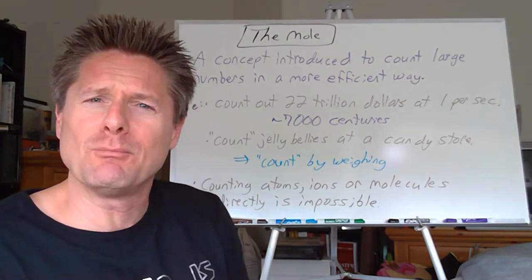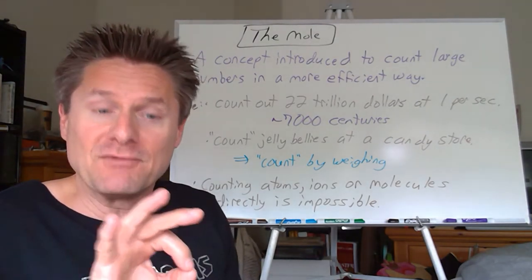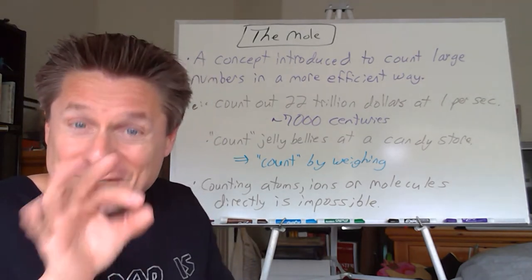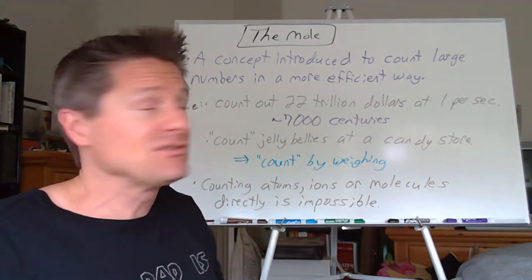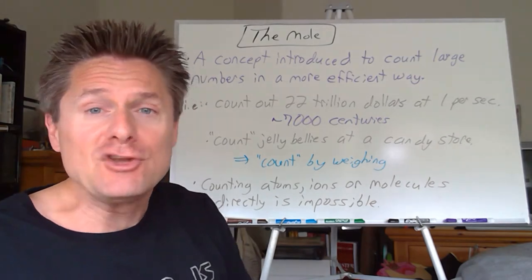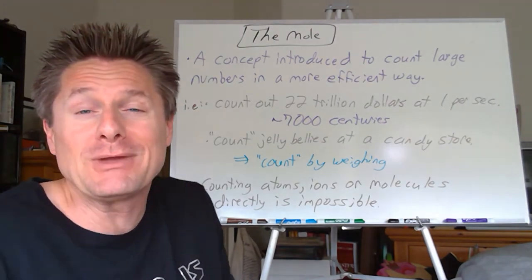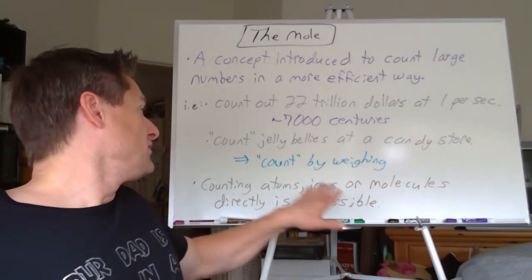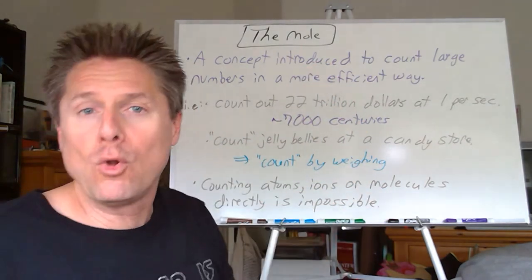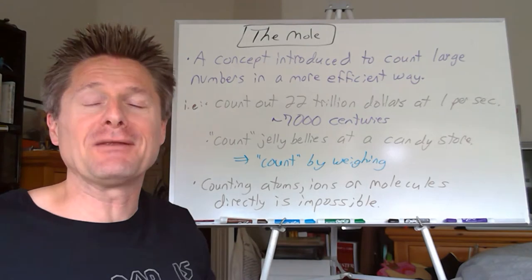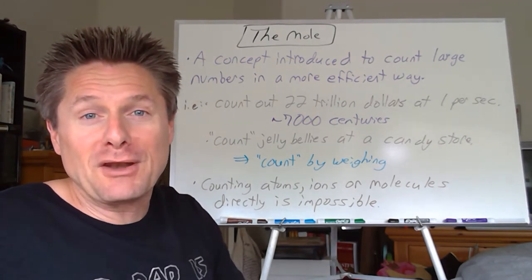They counted a more efficient way. As long as they had the average mass of a jelly belly, you could take the mass, average mass of a jelly belly, even grams per jelly belly, and you could actually get the number of jelly bells estimated in there. So there's more than one way to count, and we need to do that in chemistry. Because imagine if we had to count atoms, ions, or molecules directly. One is physically impossible. You'll go, oh, I got that atom, right? And there's so many atoms in there, it would be like trying to count $22 trillion one at a time, but exponentially more difficult. So you can get the absurdity of counting things directly.